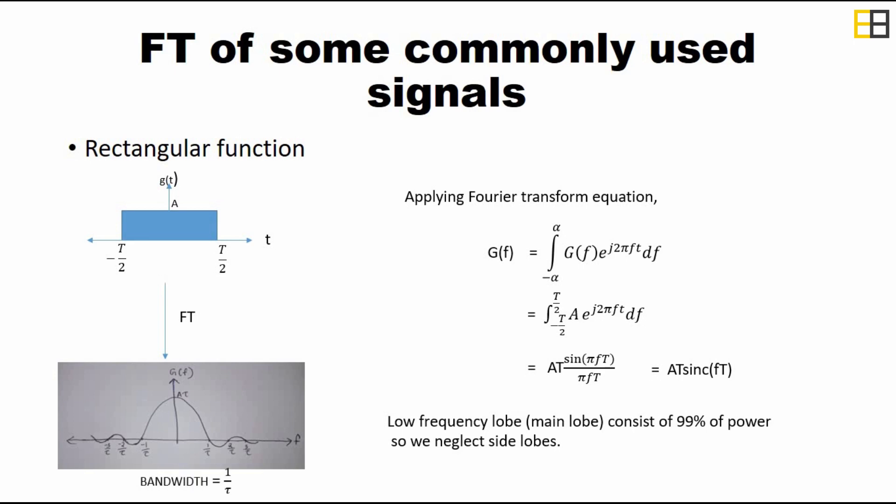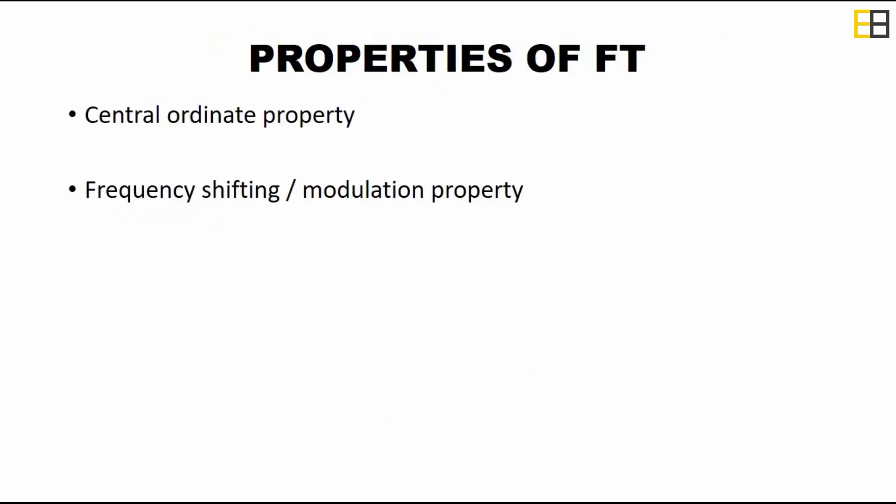Now let us discuss some important properties of Fourier transform used in communication systems. The first one is the central ordinate property. This property says that if we consider a graph in the time domain, then the area under that graph will be equal to the amplitude of the graph in the frequency domain at the origin.